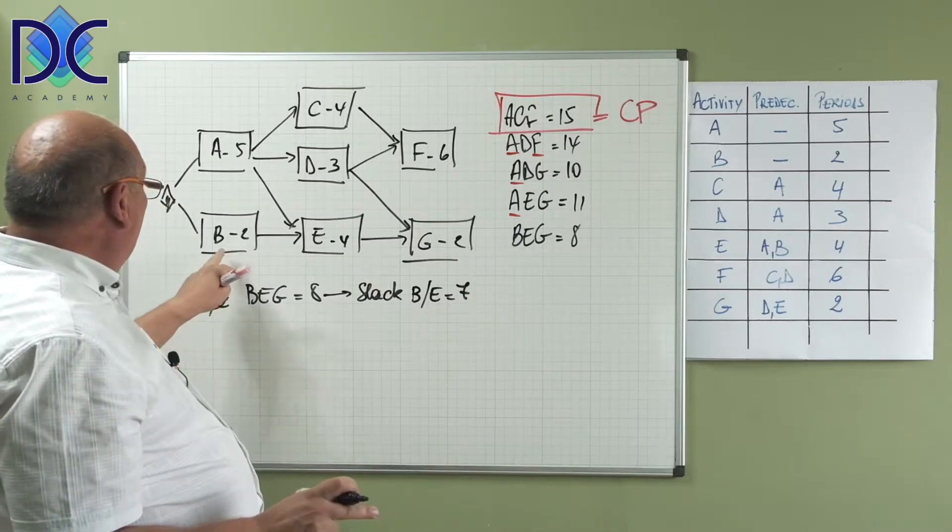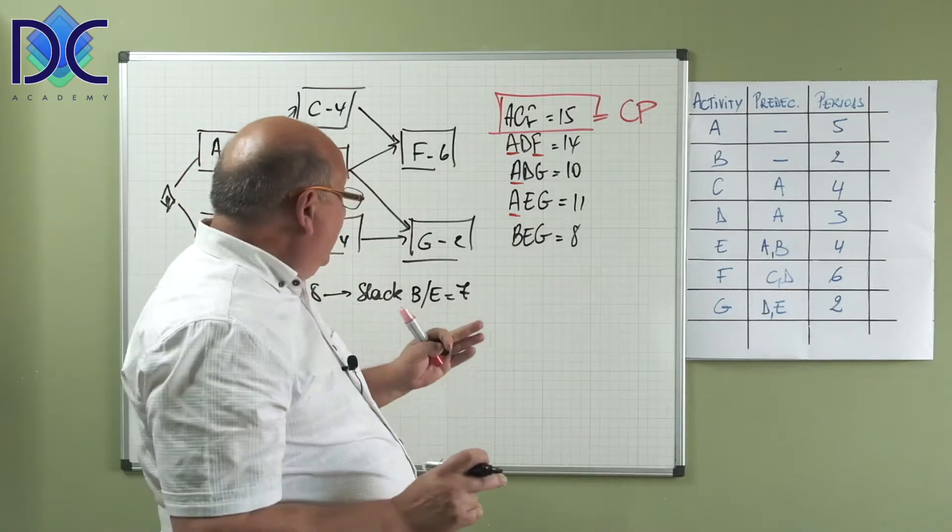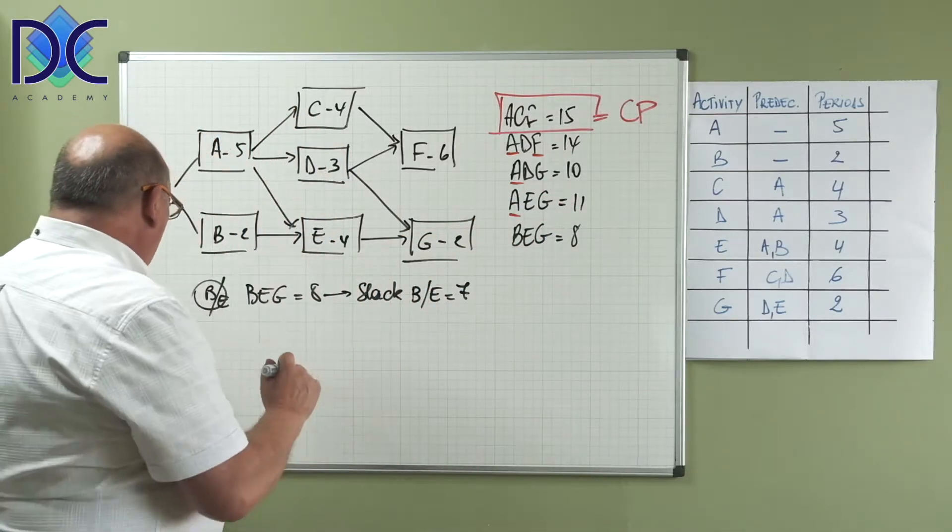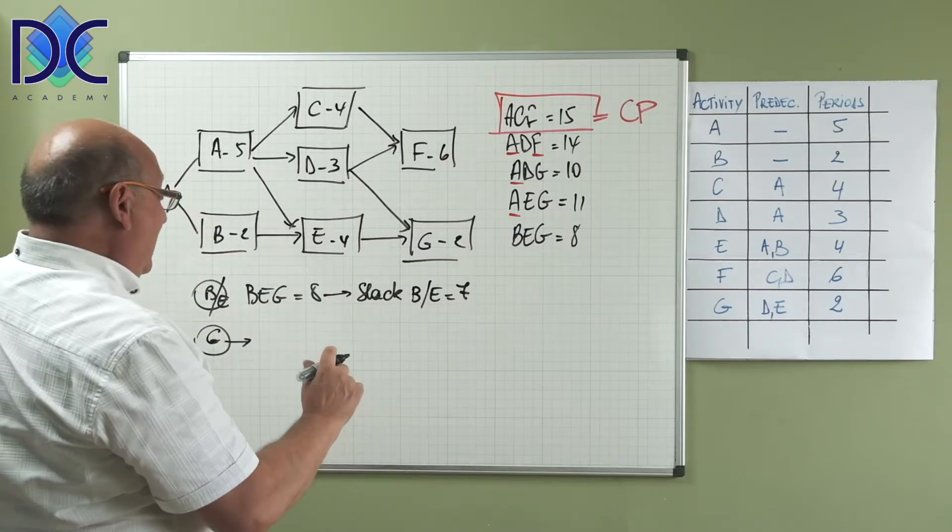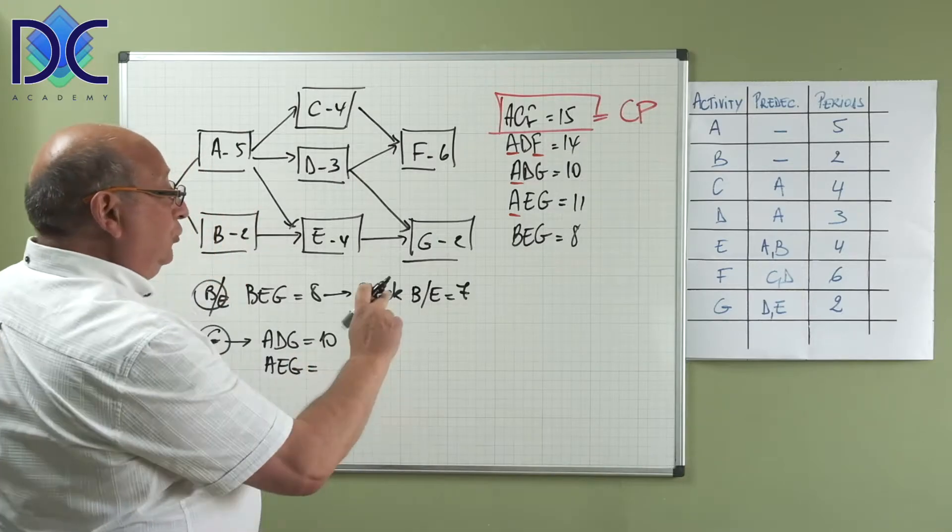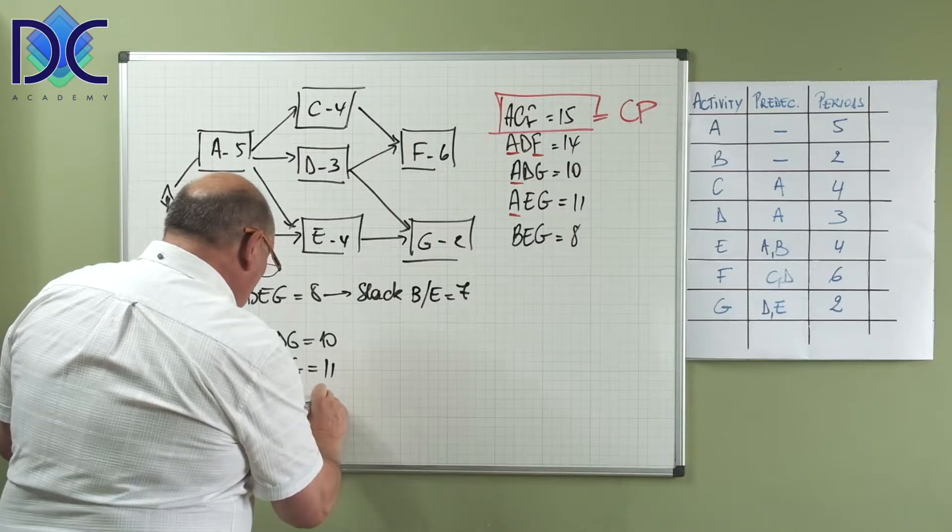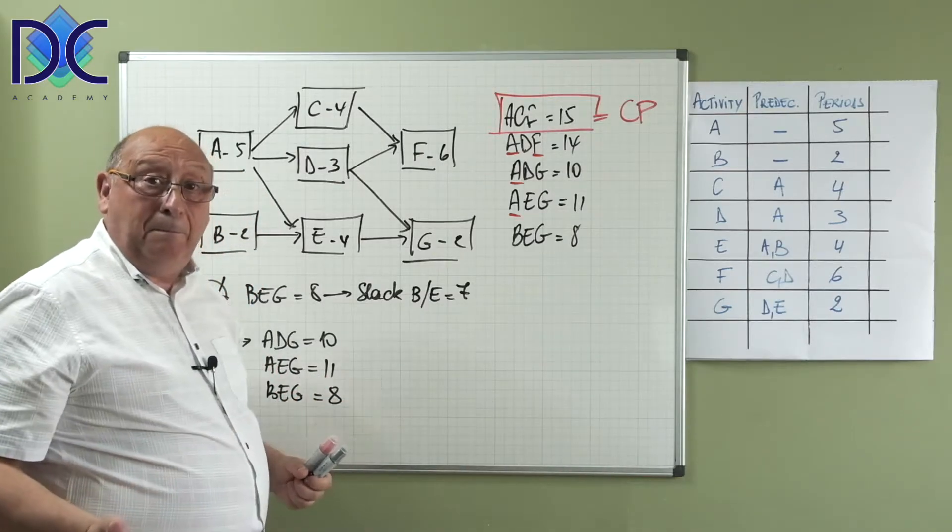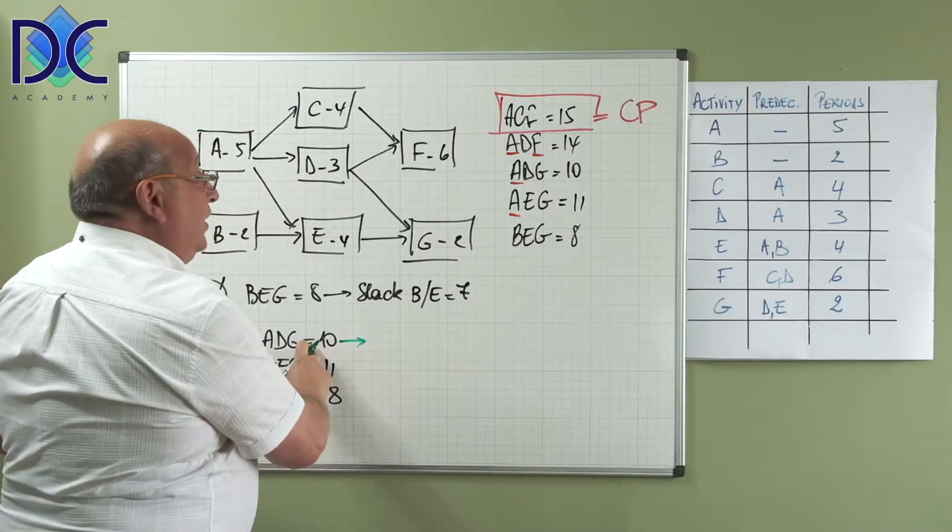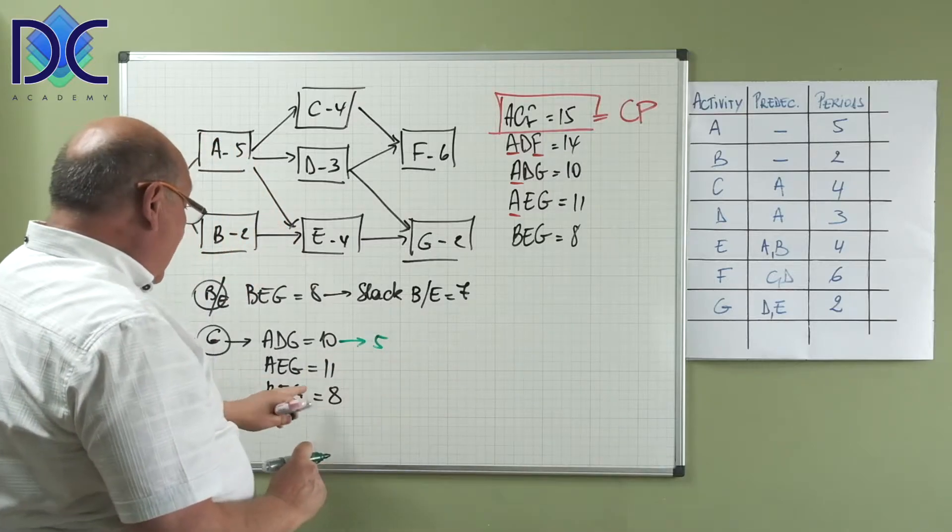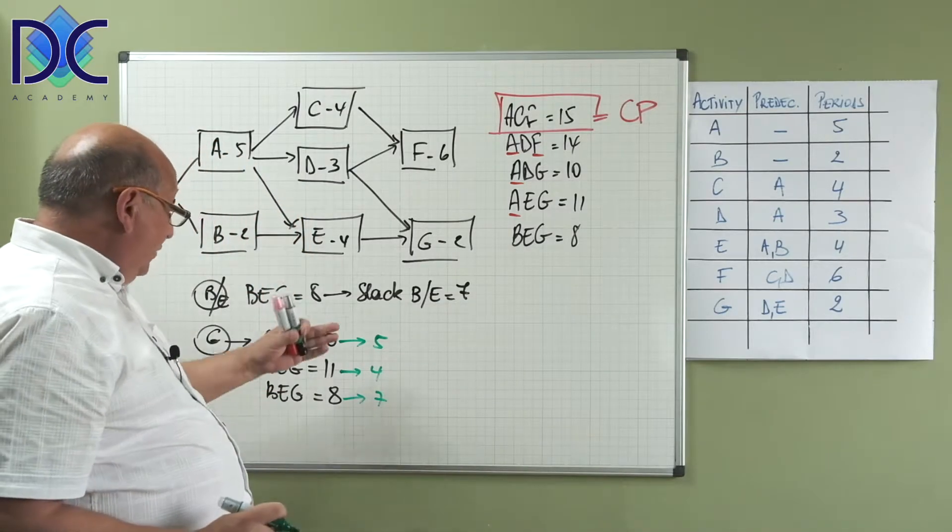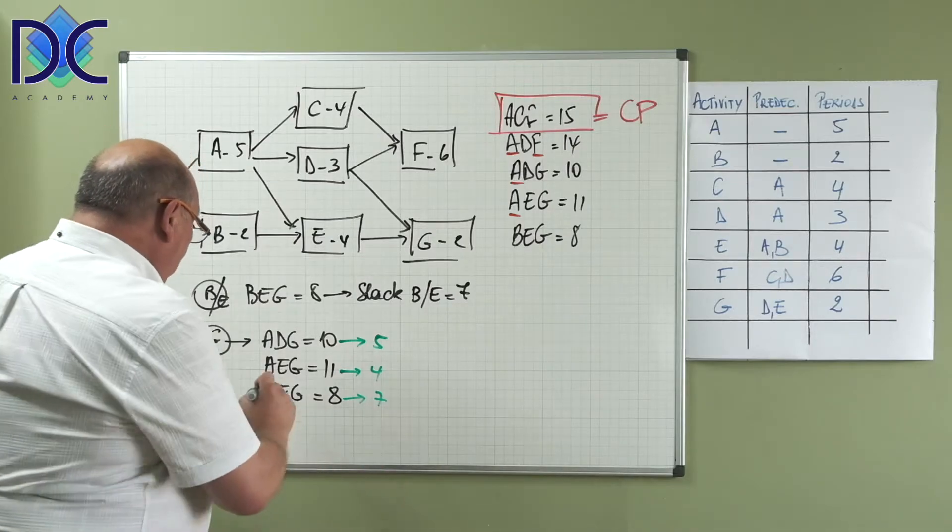Now we have to be careful here because G is on three paths. For G, we have to look at the paths ADG which has the duration of 10, AEG which has a duration of 11, and BEG which has a duration of 8. When I compare each of those with the critical path, I see that here G would have 15 minus 10, a slack of 5. Here I would have a slack of 4, and here I would have a slack of 7.